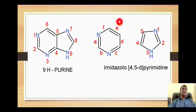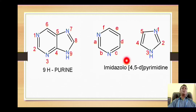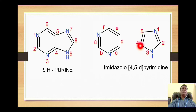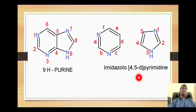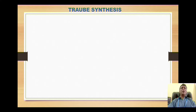If we look at the IUPAC nomenclature, this purine is called imidazole-4,5-D-pyrimidine. Here the pyrimidine ring is the basic component while imidazole is the attached component. The imidazole ring is attached with its positions 4 and 5 on the D-side of pyrimidine, so we call it 4,5-D.